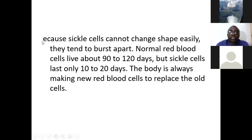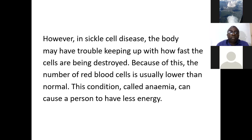Because sickle cells cannot change their shape easily, they tend to burst apart. Normal red blood cells live about 90 to 120 days, but sickle cells last only 10 to 20 days. The body is always making new red blood cells to replace old ones; however, in sickle cell disease the body may have trouble keeping up with how fast the cells are being destroyed. Because of this, the number of red blood cells is usually lower than normal — a condition called anemia.